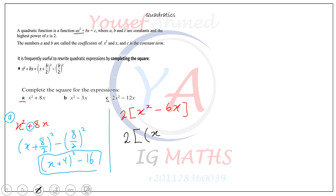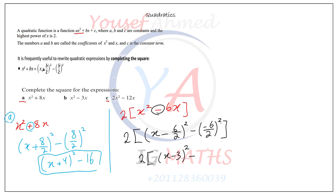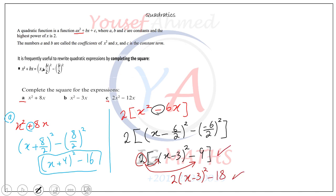Now complete the square inside: the middle sign is minus, so you get (x − 6/2)² − (6/2)², keeping 2 outside. That gives 2[(x − 3)² − 9]. You can also expand the 2 to write 2(x − 3)² − 18. Both are correct, but the factored form is preferred.